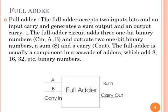Full adder. The full adder accepts two input bits and an input carry and generates a sum output and an output carry. The full adder circuit adds three one-bit binary numbers: carry-in, A, and B, and outputs two one-bit binary numbers.